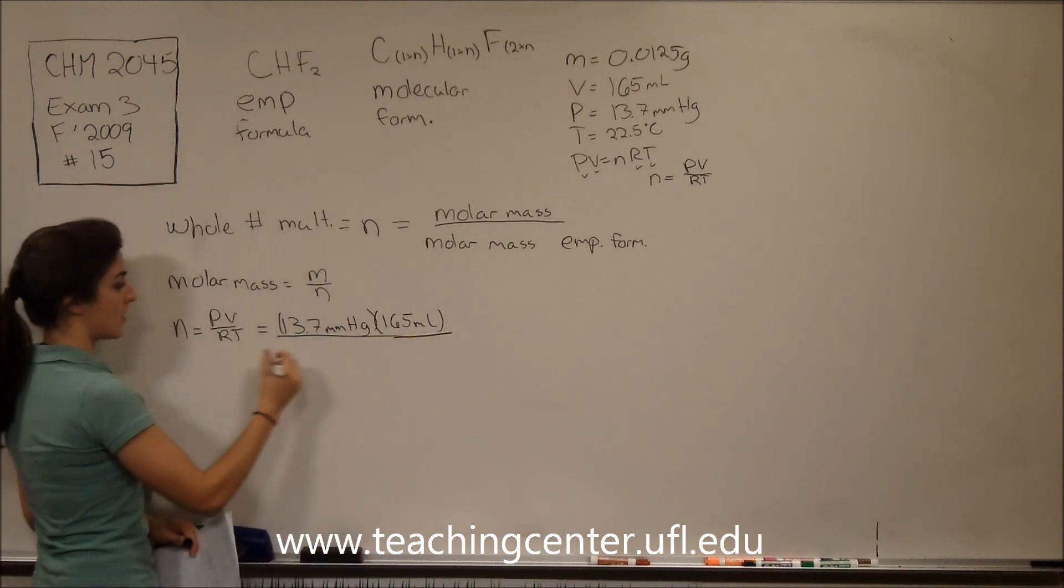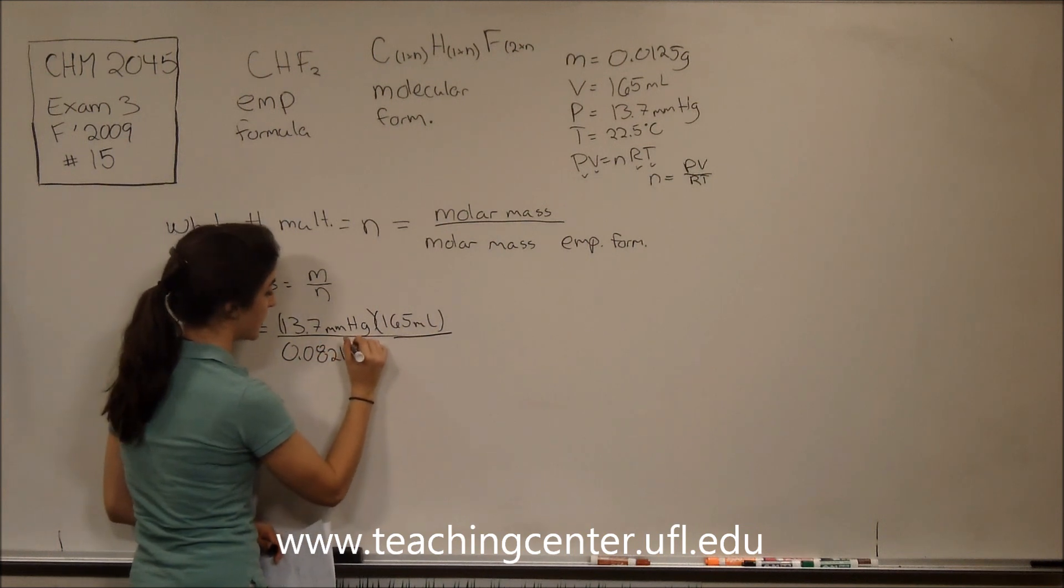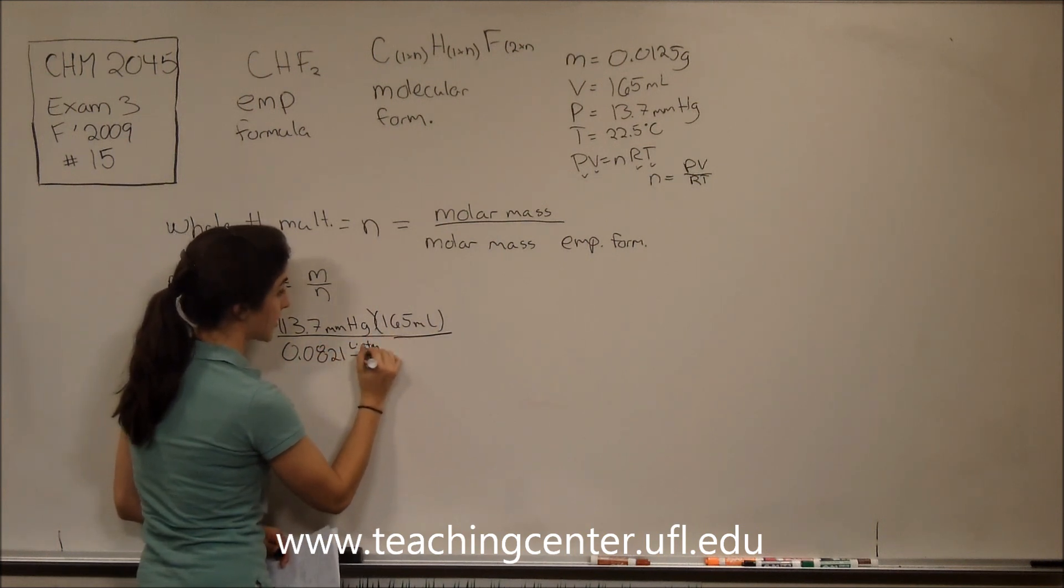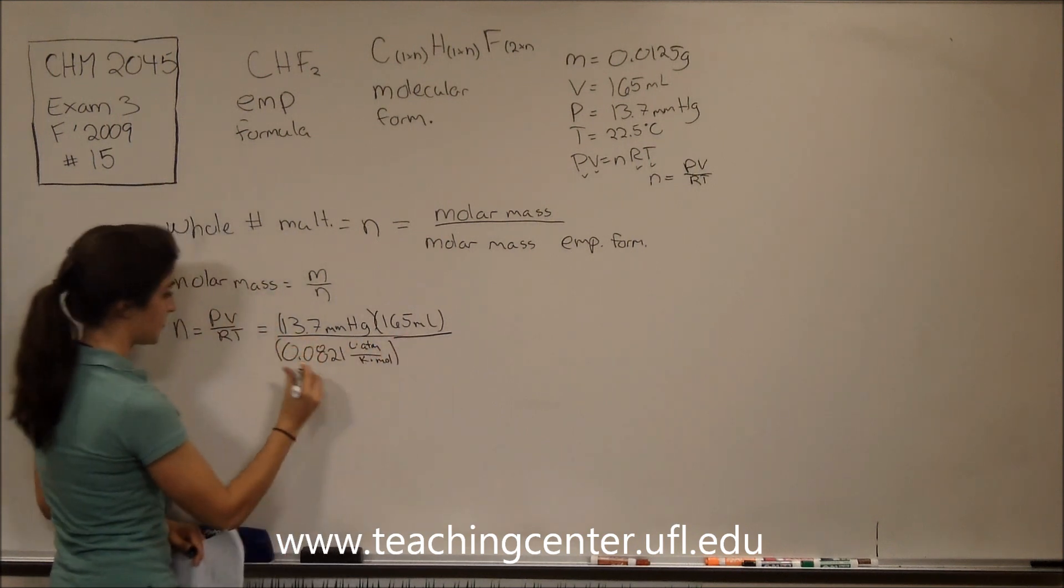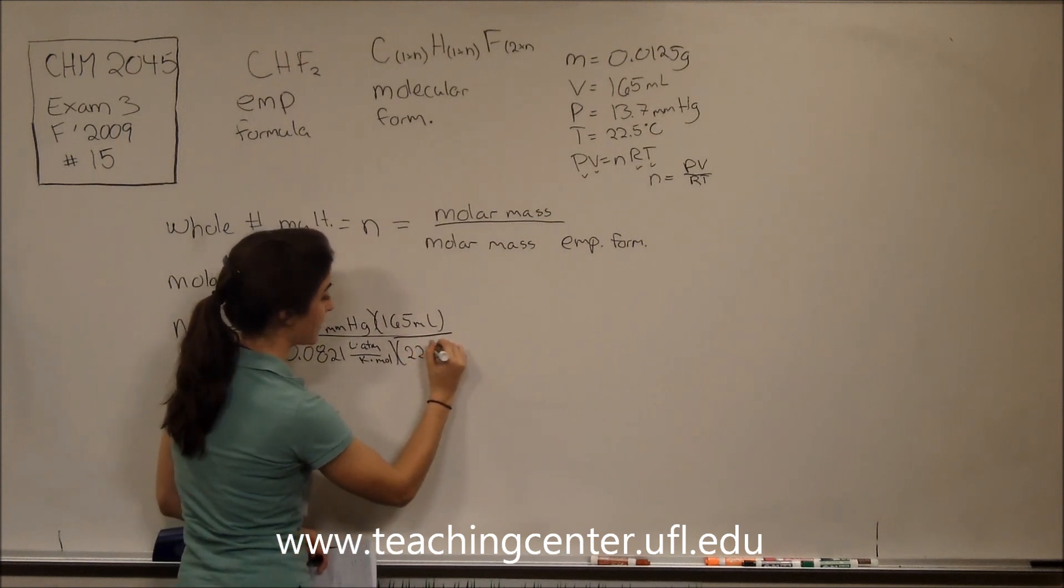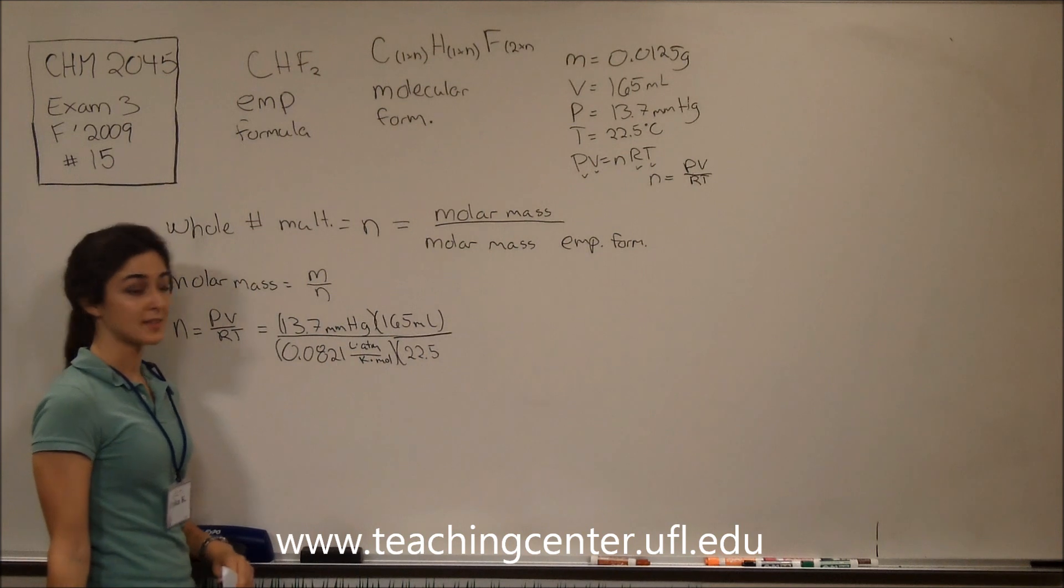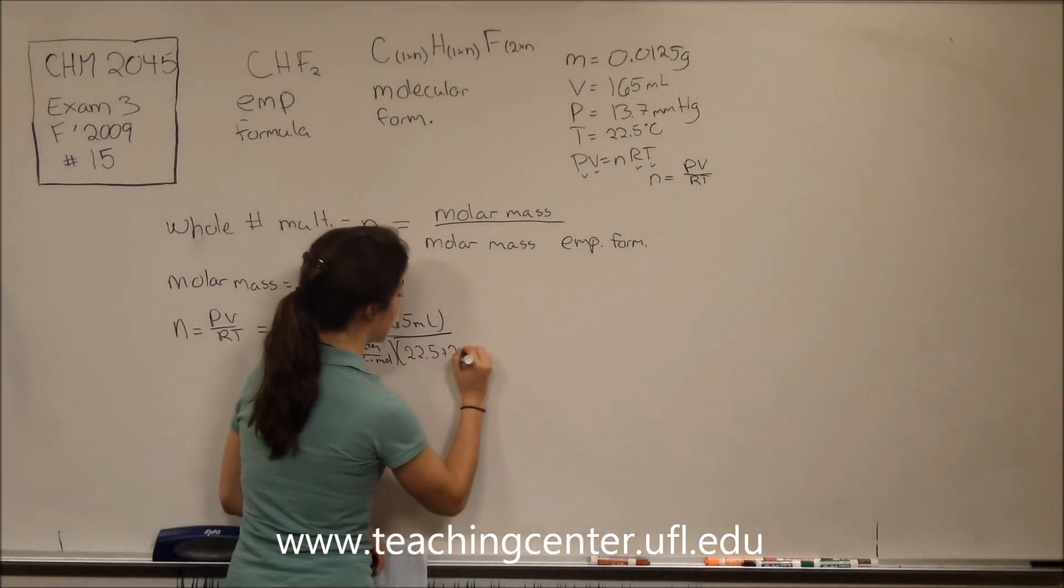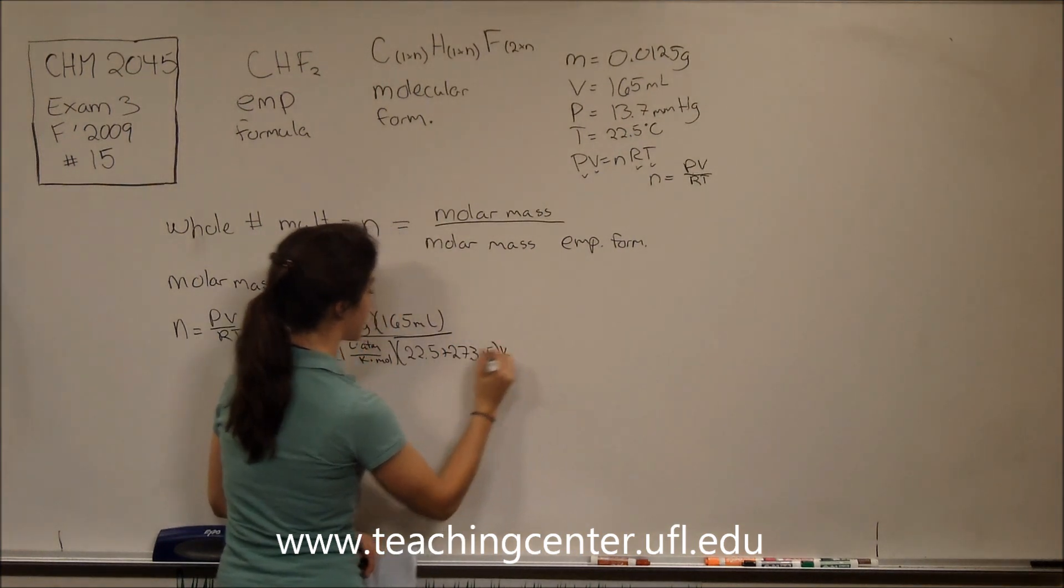R is 0.0821 liters times atmosphere per Kelvin times mole. And then temperature, which is 22.5 degrees Celsius. But we can't leave it in Celsius. It needs to be in Kelvin. So we add 273.15, and that is Kelvin.